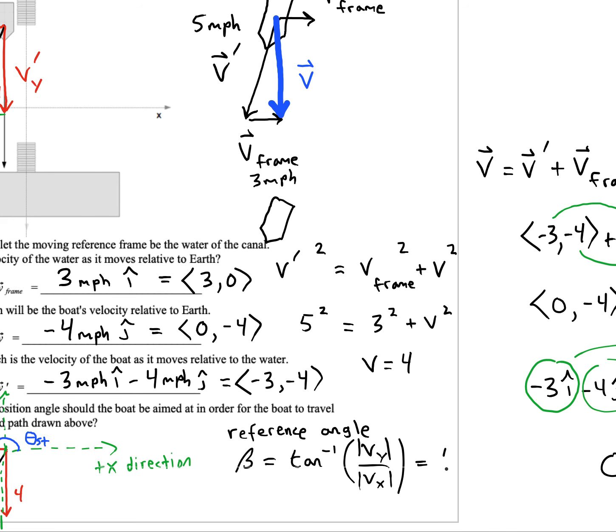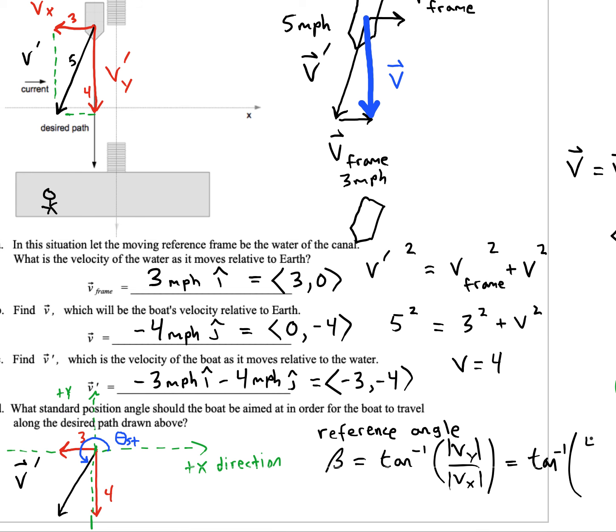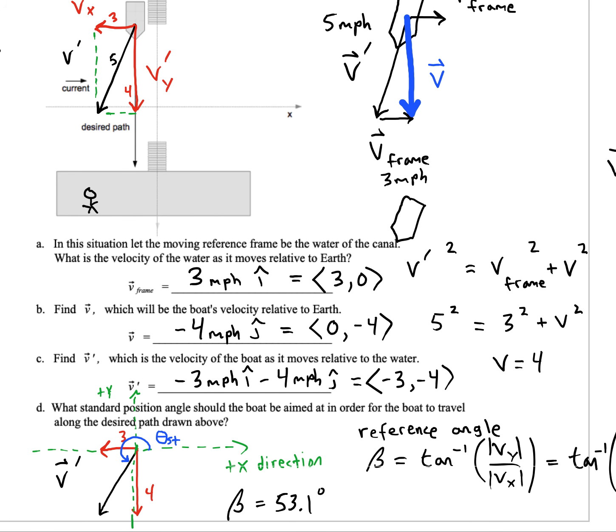Let's plug that in. Our components were 4 and 3. We want to divide the y by the x, then we get our reference angle, which is 53.1 degrees. As you can see, that can't possibly be the standard position angle because the standard position angle is going to be between 180 and 270. But what is the reference angle really? It is the angle that your vector makes with the x-axis. So this is a 53. So if we just do a little bit of addition, we can find that standard position angle.